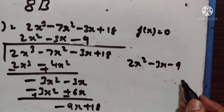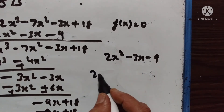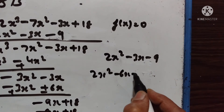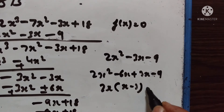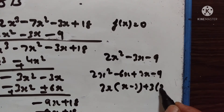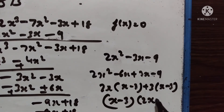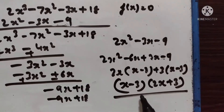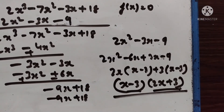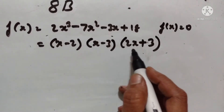Let us factor 2x² - 3x - 9 further. Product is -18 and sum is -3. 6 × (-3) = -18. So we split as 2x² - 6x + 3x - 9 = 2x(x - 3) + 3(x - 3) = (x - 3)(2x + 3). So the factors are (x - 2), (x - 3), and (2x + 3). f(x) = (x - 2)(x - 3)(2x + 3).